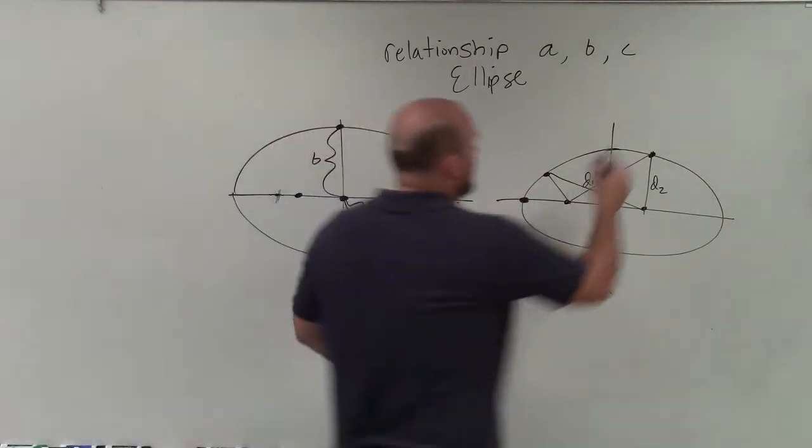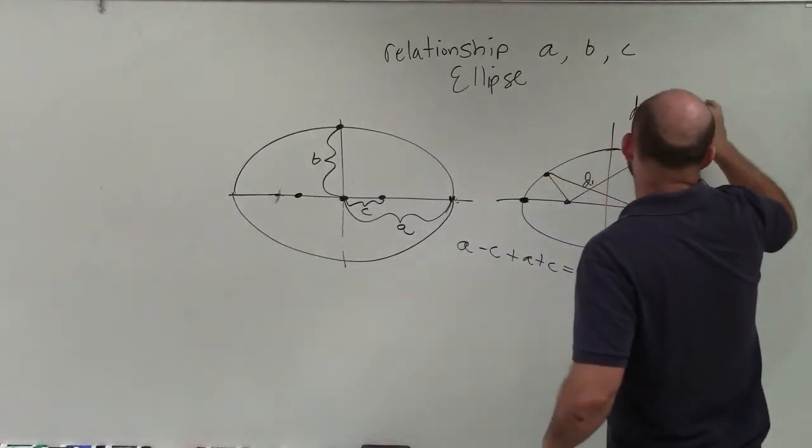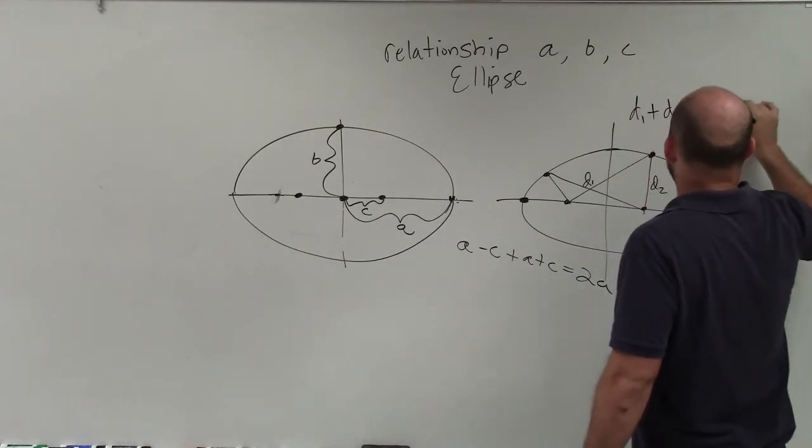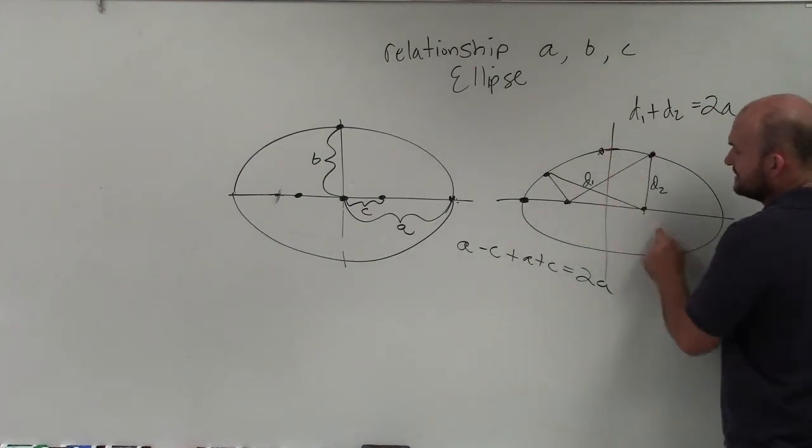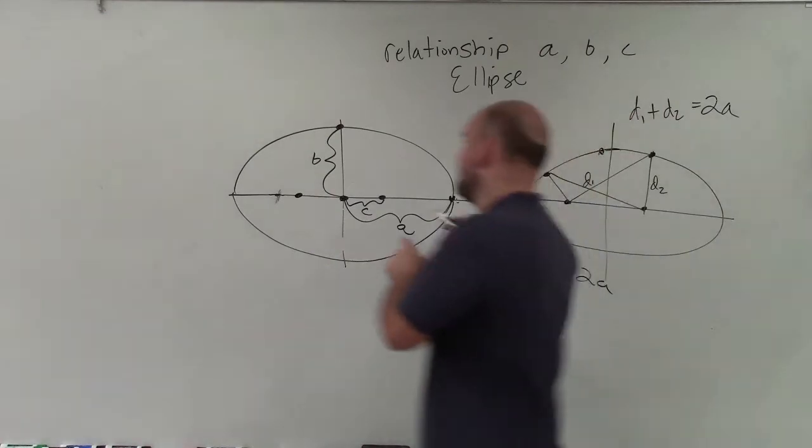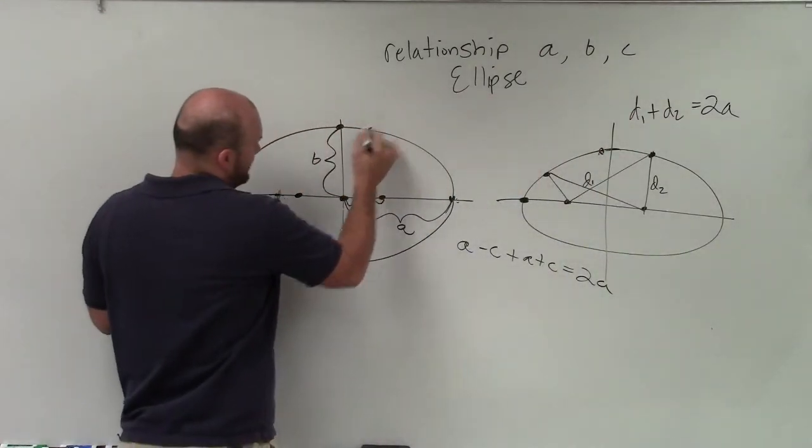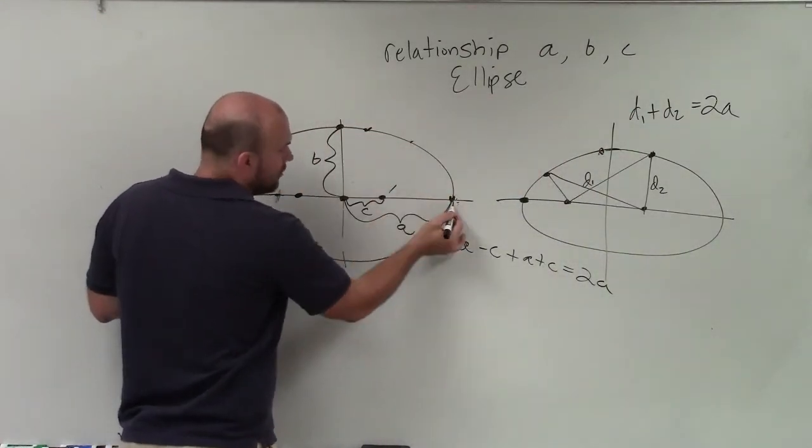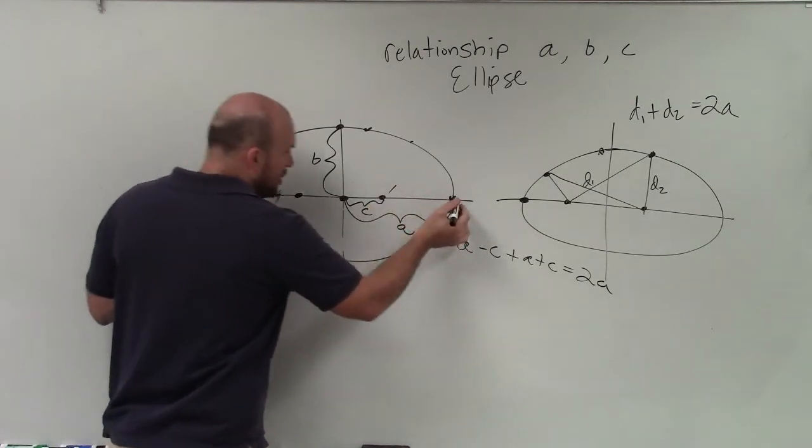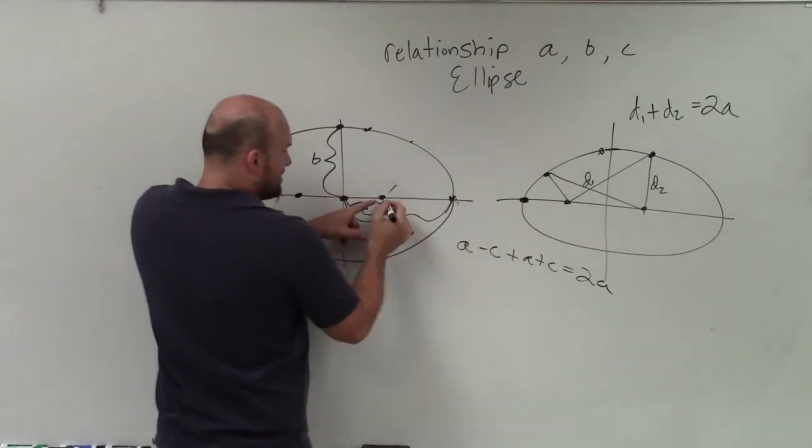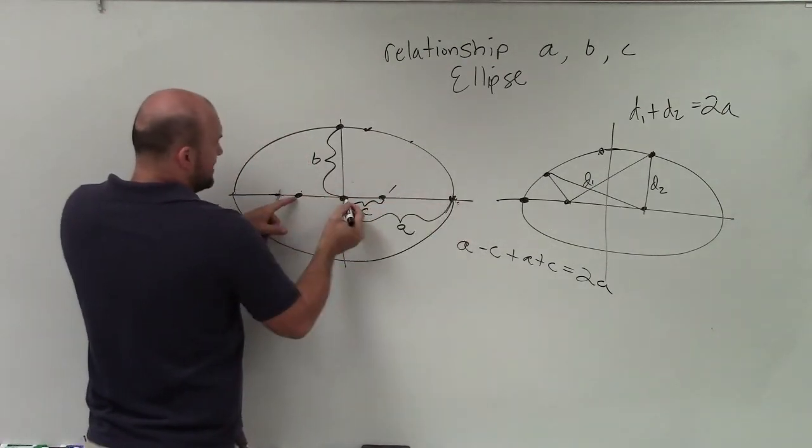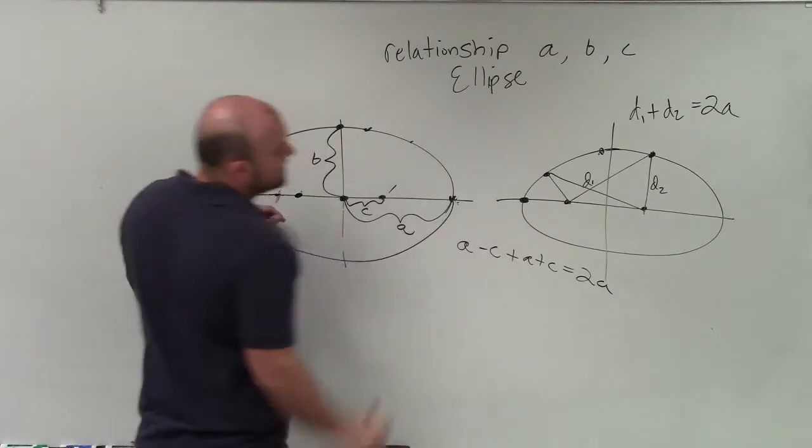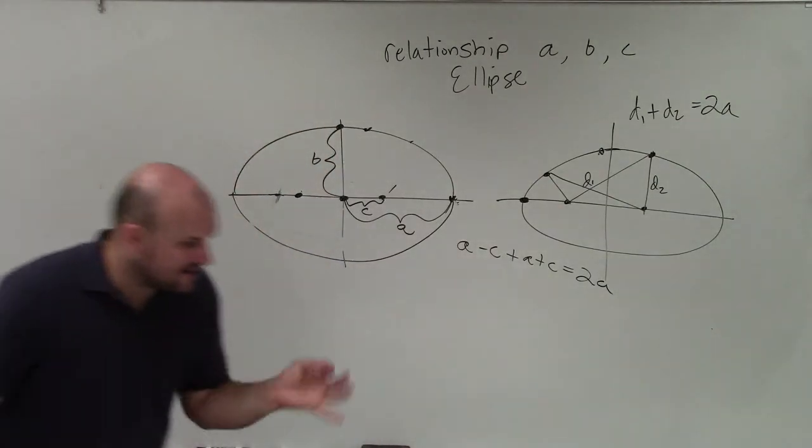So therefore, d1 plus d2 is equal to 2a. Remember what I said. It doesn't matter where the point is. Anywhere, the sum of the distances to the two foci is always going to be equal. So if I write, if I do this point, boom, boom. This point, boom, boom. This point, boom, boom. Well, this point, that's from there to there, as well as from there to there. So the distance from here to here is a minus c. And then from here is a plus c. So you can see that that sum is equal to 2a. And that's very, very important.